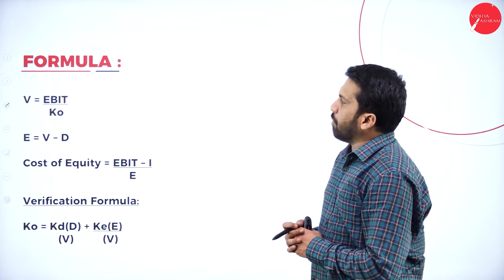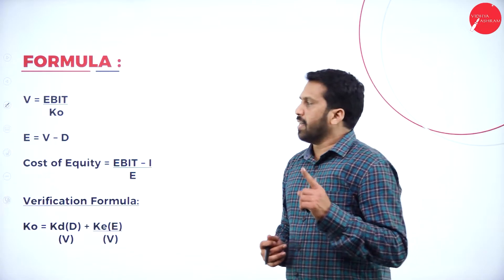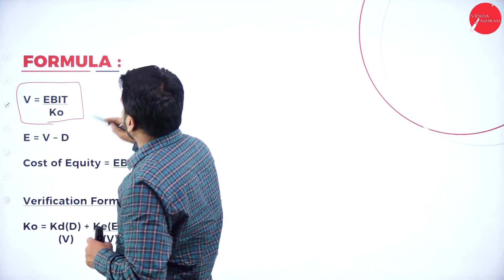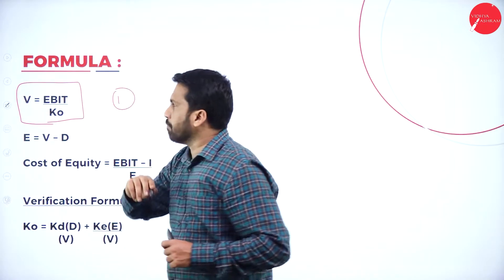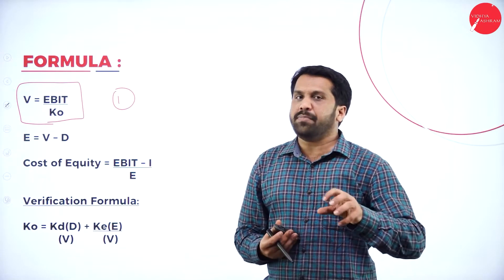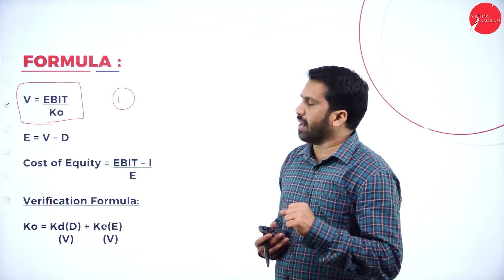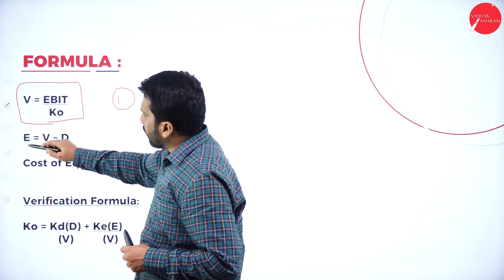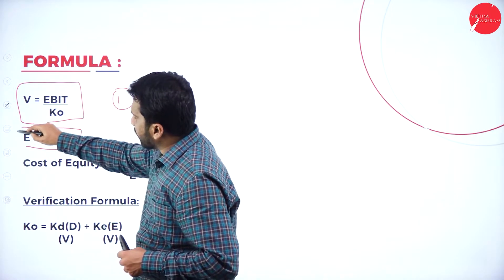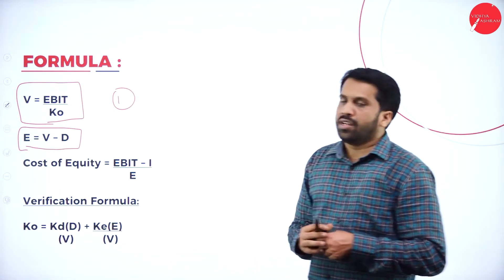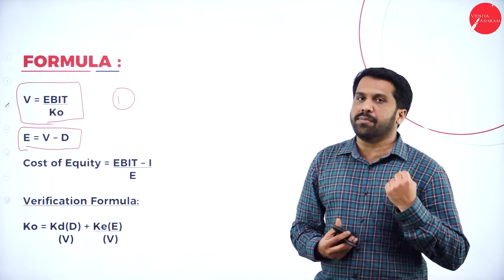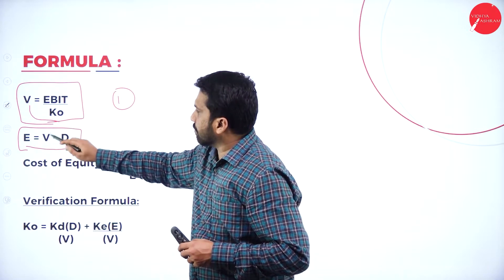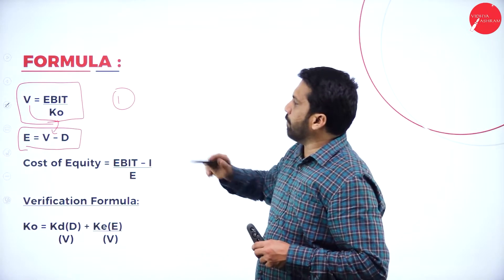These are the formulas you are supposed to remember. The first thing you need to find out is the value of the firm. The formula is: Value = EBIT divided by cost of capital. This is the first one — value of the firm. Already you will have found out the value.